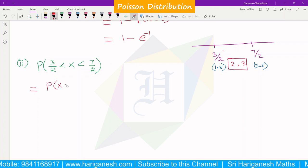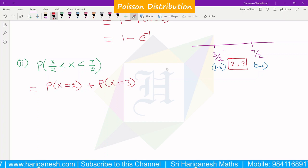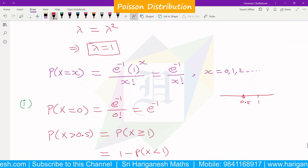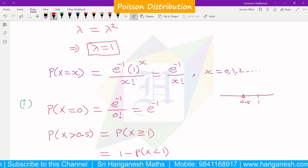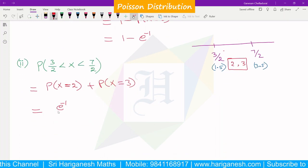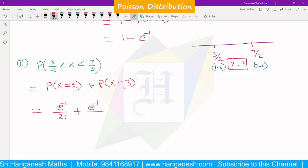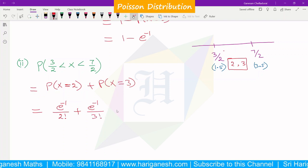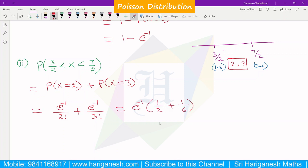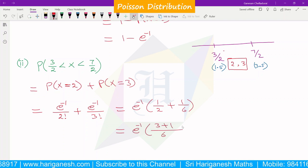P(X = 2) + P(X = 3). The probability value is e^(-1) / x!. For x = 2, this is e^(-1) / 2!. For x = 3, this is e^(-1) / 3!. So the answer is e^(-1) / 2! + e^(-1) / 3! = e^(-1)(1/2 + 1/6) = e^(-1) × 4/6.